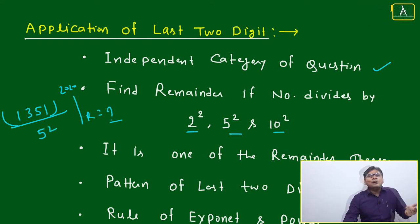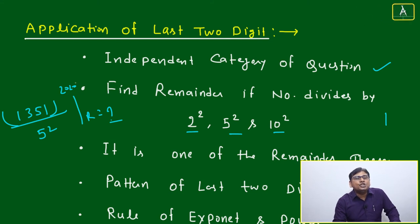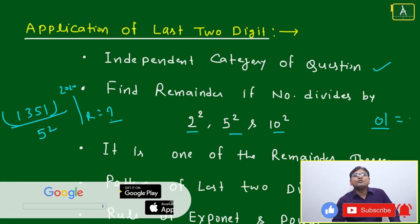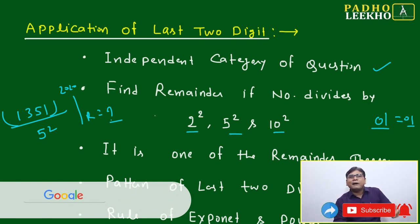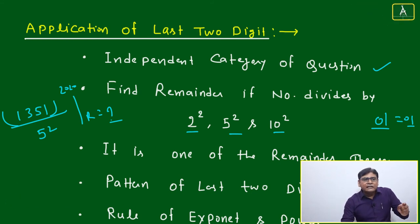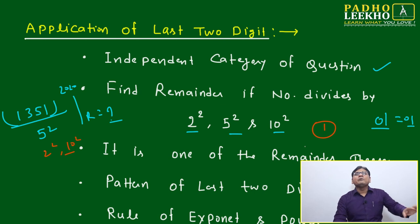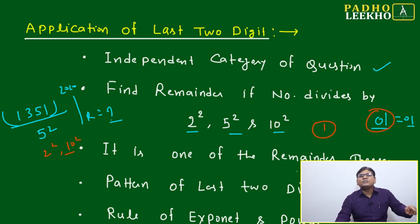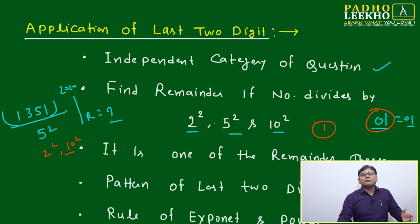Example: 1351 to the power 2020, divided by 5² (= 25). Find the remainder. To solve this, find the last two digits. Unit digit is 1. Second last digit: 5 (tens digit of 1351) × 0 (unit digit of 2020) = 0. So last two digits are 01. Now 01 divided by 25 gives remainder 1. Similarly, dividing by 2² (4) or 10² (100) also gives remainder 1. The last two digits being 01 means the remainder is always 1 in all three cases.